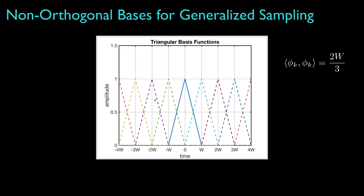With a little calculus work, we can show that the inner product of any of these basis functions with themselves is equal to 2 times w over 3. And the inner product of any basis function with its nearest neighbor to the right or left is equal to w over 6. The inner product of any basis function with another that is more than one index away, so for instance this one with this one, would always be 0 because those triangles have no places where they overlap.